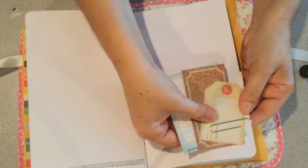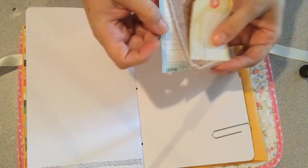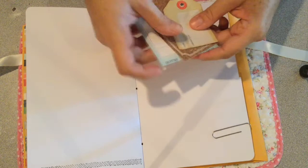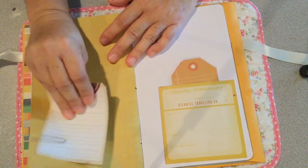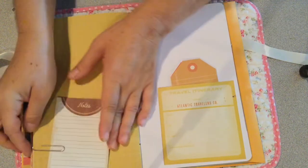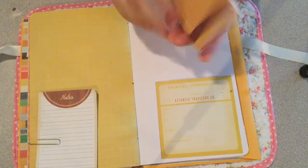There are three little cut-aparts from the paper line. I can either journal on them or do whatever, I put them throughout the book.